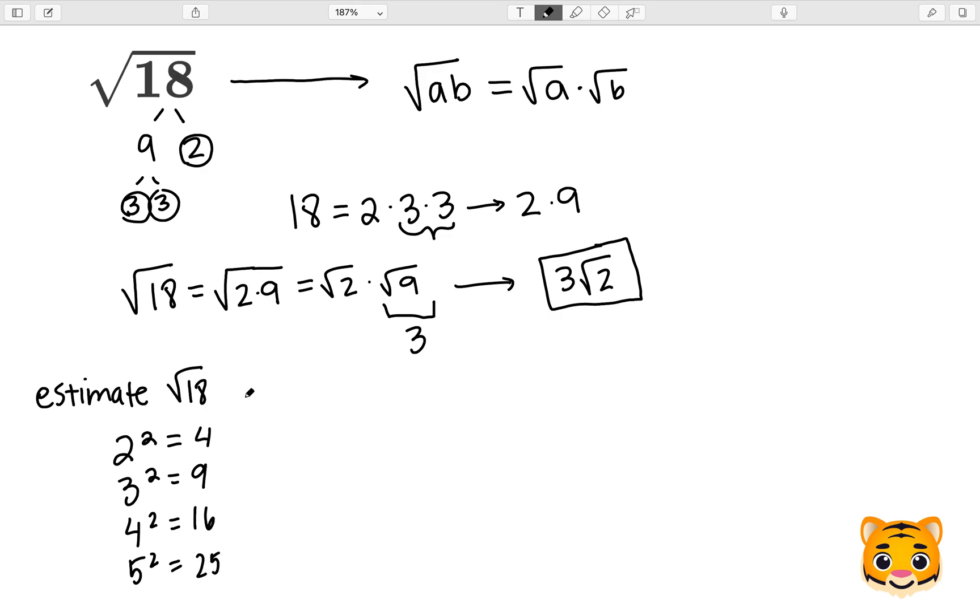We can see the value of the square root of 18 is between 4 squared and 5 squared. So now we can write the square root of 16 is less than the square root of 18, which is less than the square root of 25.